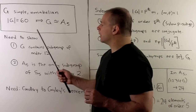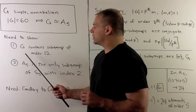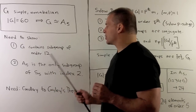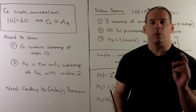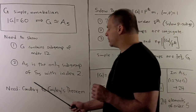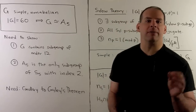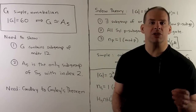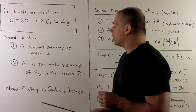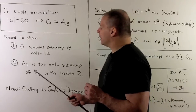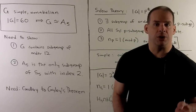To show our statement, I'll need two things. First, we're going to use Sylow theory to show that G contains a subgroup of order 12. With that, we can use the corollary to Cayley's theorem to embed our group as a subgroup of S5, the symmetric group on five letters. Then we'll show that A5 is the only subgroup of S5 with index 2.